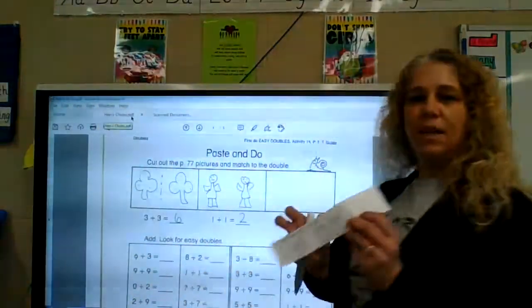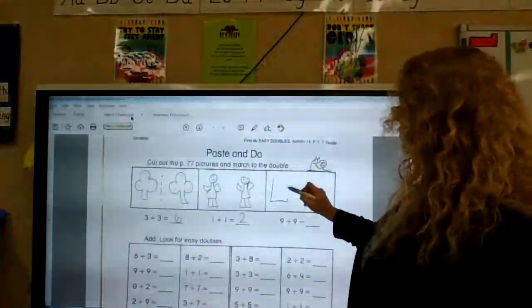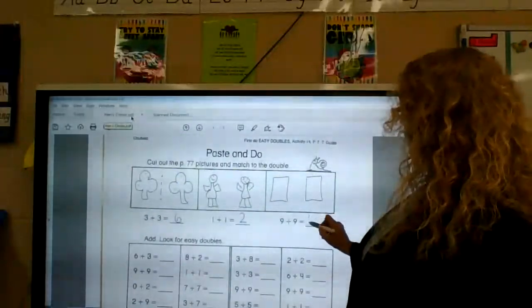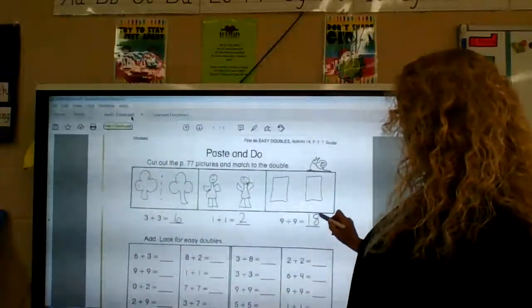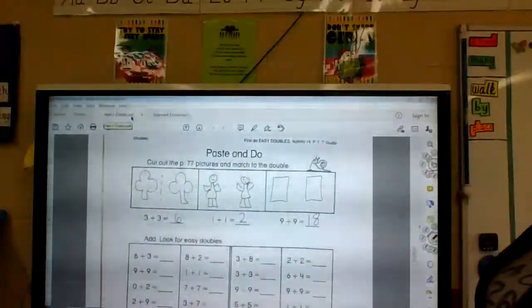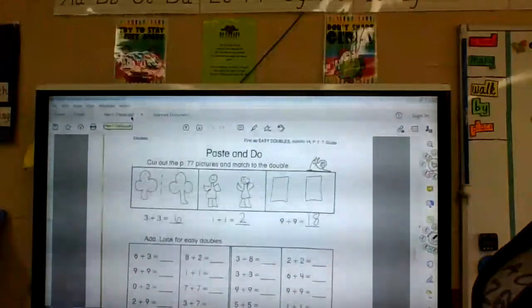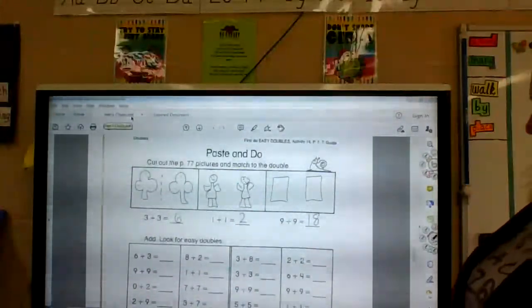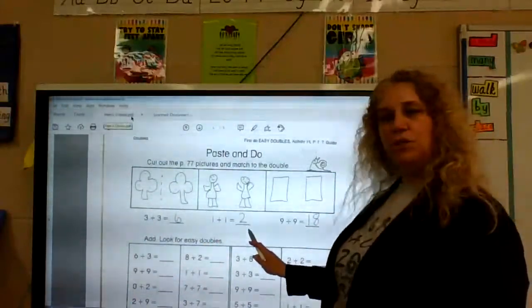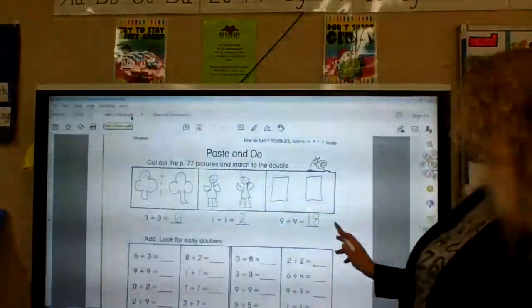So, nine plus nine is left, is our tic-tac-toe in the middle. Oops. So, you're going to glue that here. I'm just going to do boxes. And that equals 18. That's our hard way. I remember that. Eighteen. Nine plus nine is eighteen.